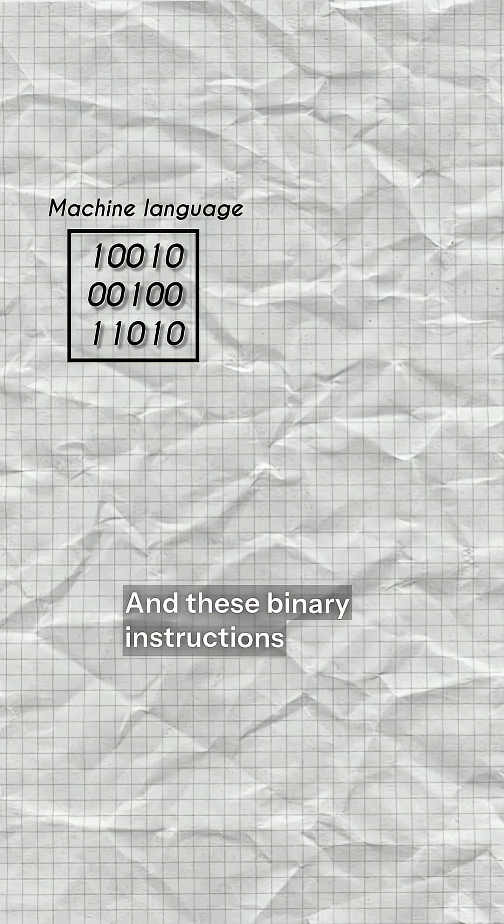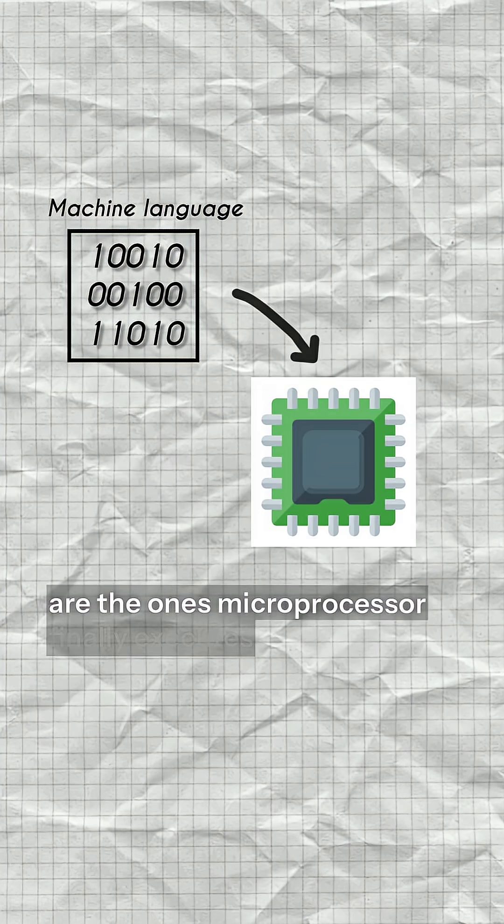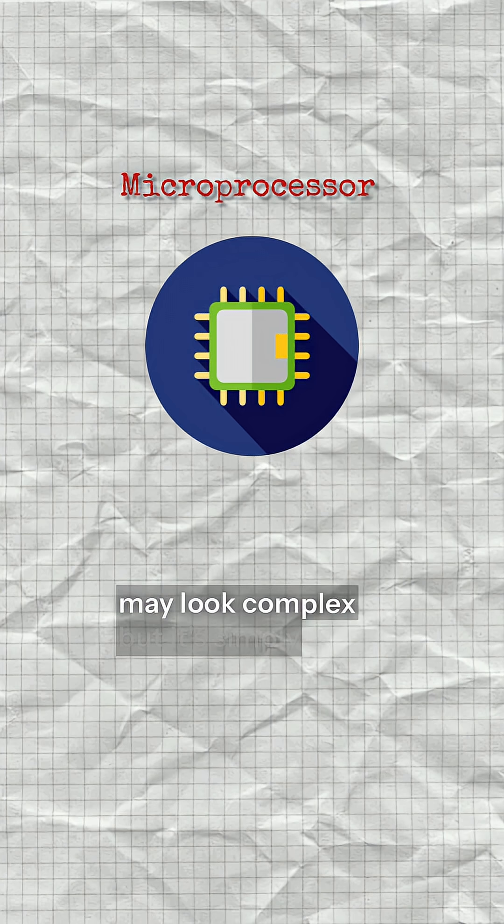And these binary instructions are the ones microprocessor finally executes. So in the end, a microprocessor may look complex, but it's simply a CPU on a chip, turning your code into zeros and ones to get the job done.